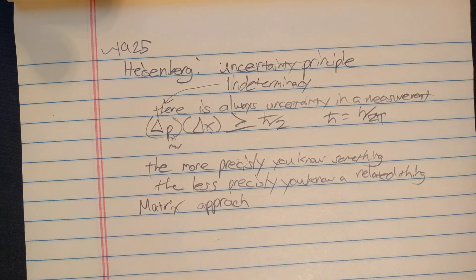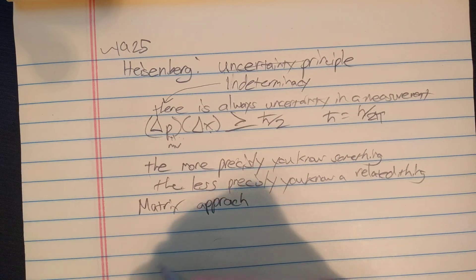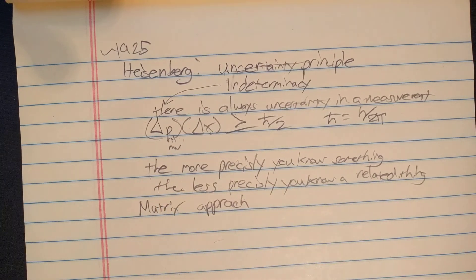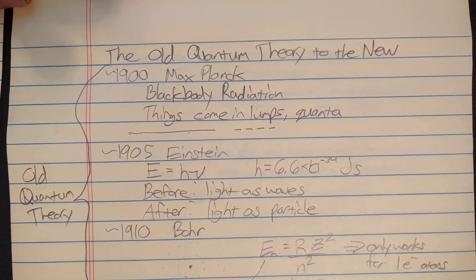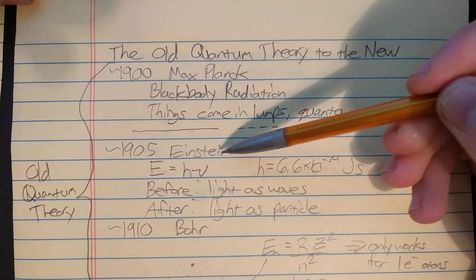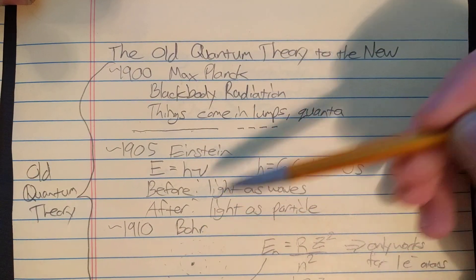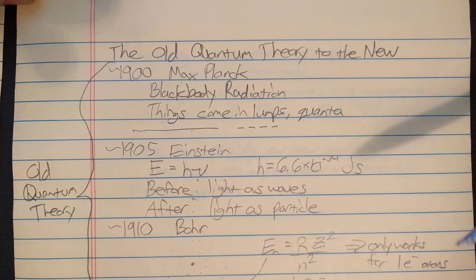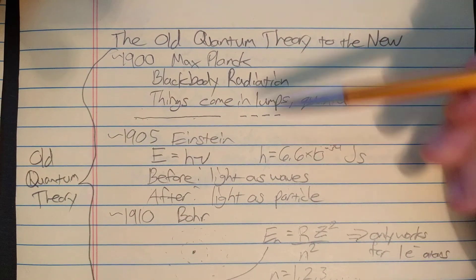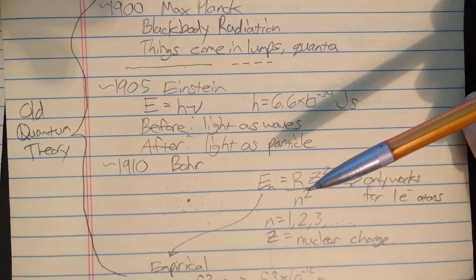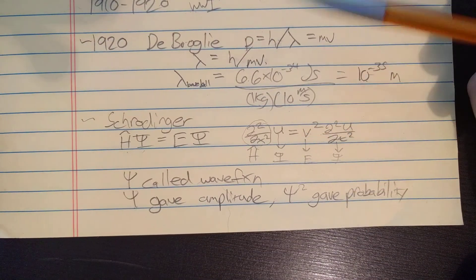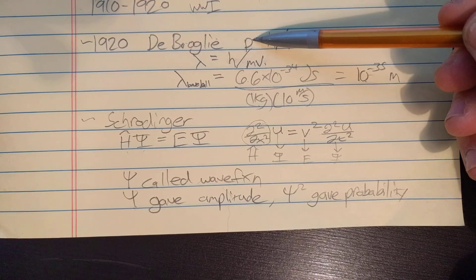Today, I talked about how we got from the old quantum theory to the new. The old quantum theory was developed mostly by Planck, Einstein and Bohr. The new thing here was that things come in lumps, or things are quantized. But this theory was not perfect, because it still did not explain some things, such as the double slit experiment.